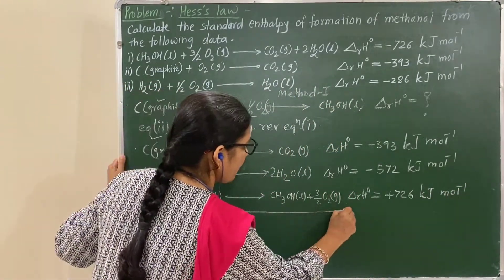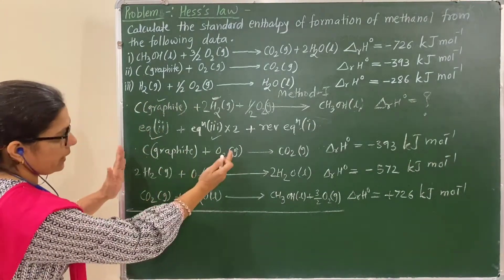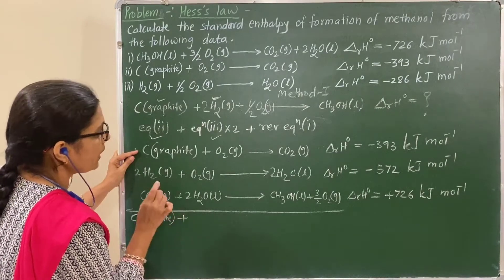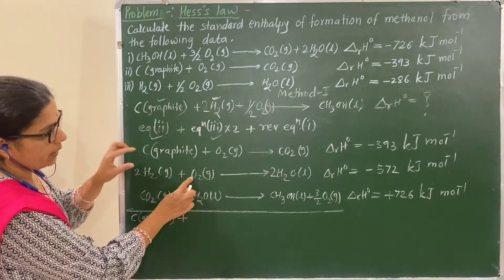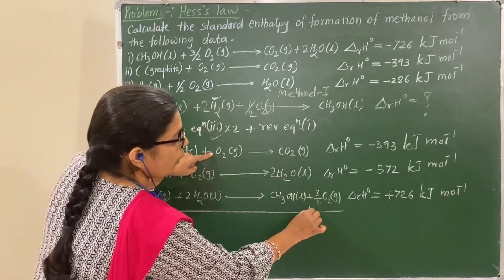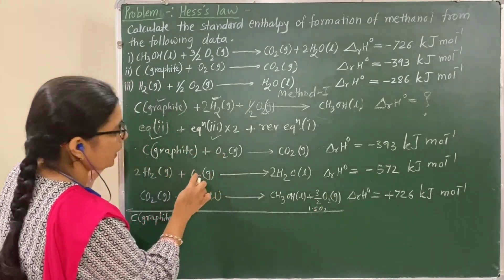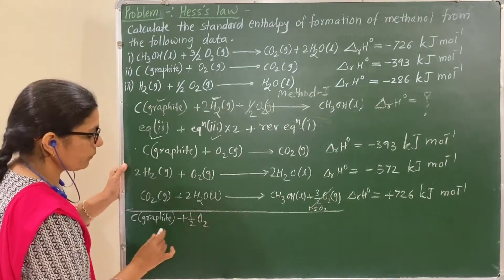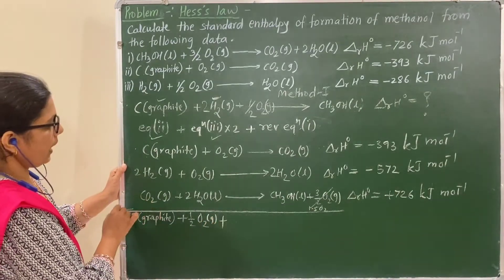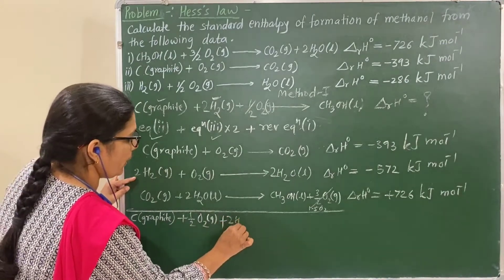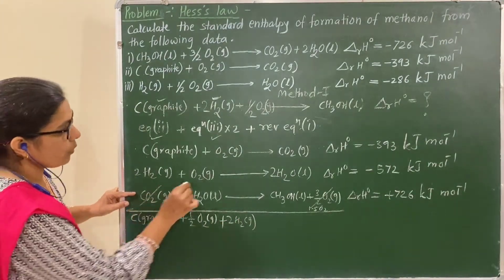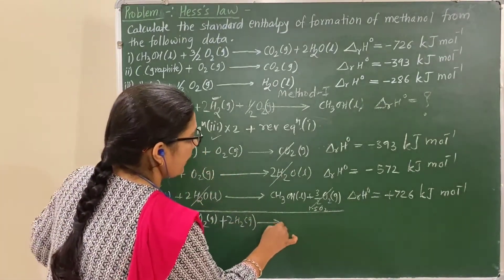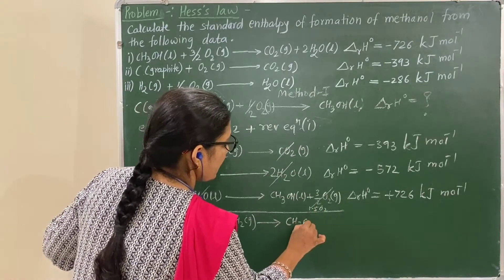Now add all these equations. Carbon (graphite) is on the left side. For O₂: there is 1 O₂ from equation 2, 1 O₂ from equation 3×2, and 3/2 O₂ (1.5 O₂) on the right side from the reversed equation. So 1.5 O₂ cancels out, leaving half O₂ remaining. The CO₂ and 2H₂O cancel out from both sides.